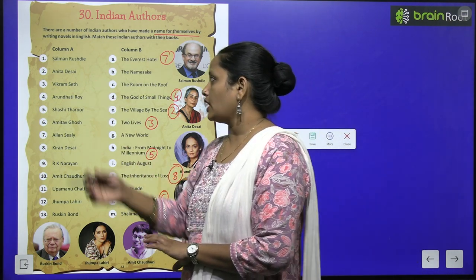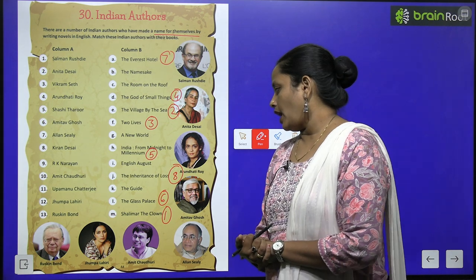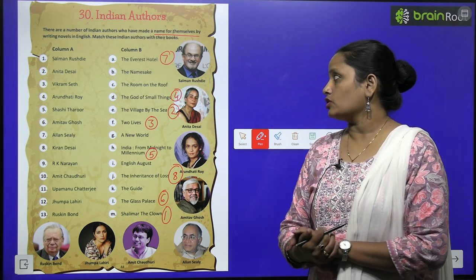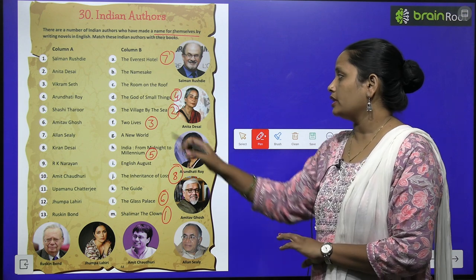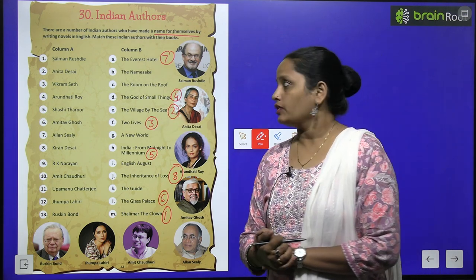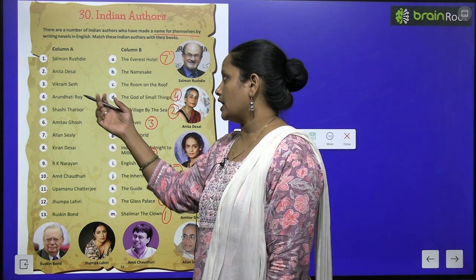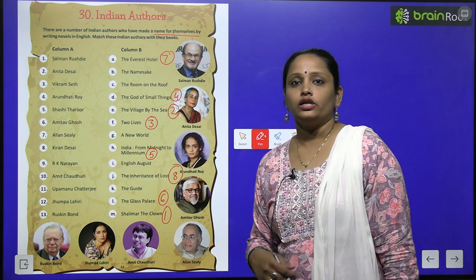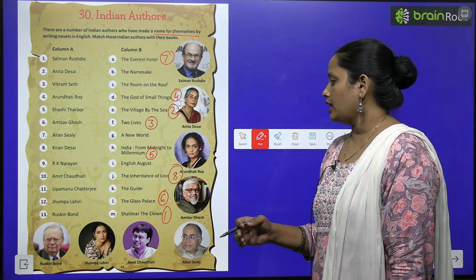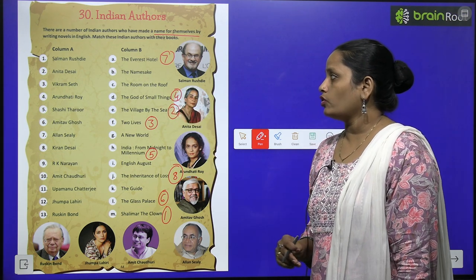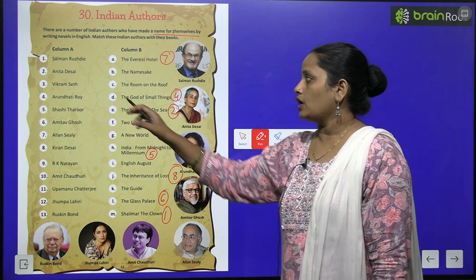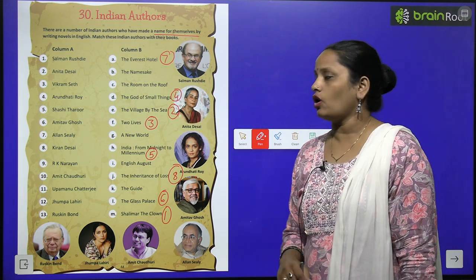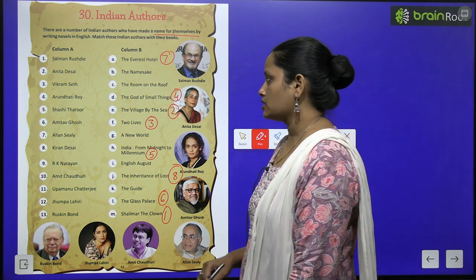Second is Anita Desai — here you can see the picture — unhone jo book likhi us ka naam hai The Village by the Sea. Third is Vikram Seth, aur inhone book likhi hai Two Lives. Fourth is Arundhati Roy, aur inhone jo book likhi us ka naam hai The God of Small Things.